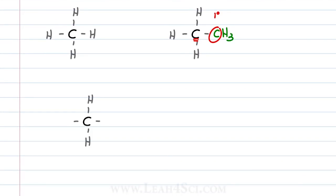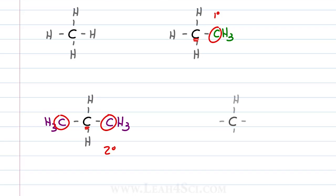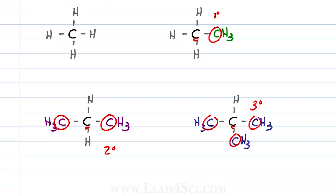If I remove two hydrogen atoms and replace them with other carbons — for example methyl groups — the central carbon, now being attached to two other carbon atoms, is considered a secondary carbon. If I swap three hydrogens for carbon, in this case methyl, the central atom is now attached to one, two, three carbon atoms, making it a tertiary carbon.